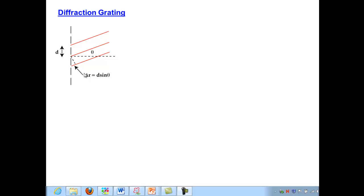And therefore the path difference, the extra distance that has to be traveled by the light coming from the lower slit, is simply d sine theta.